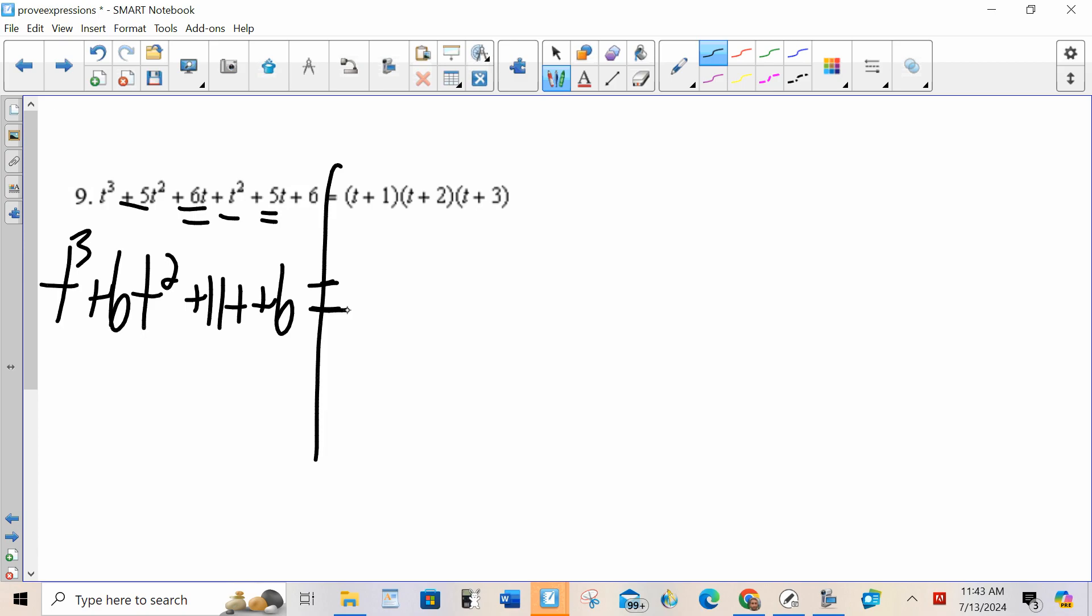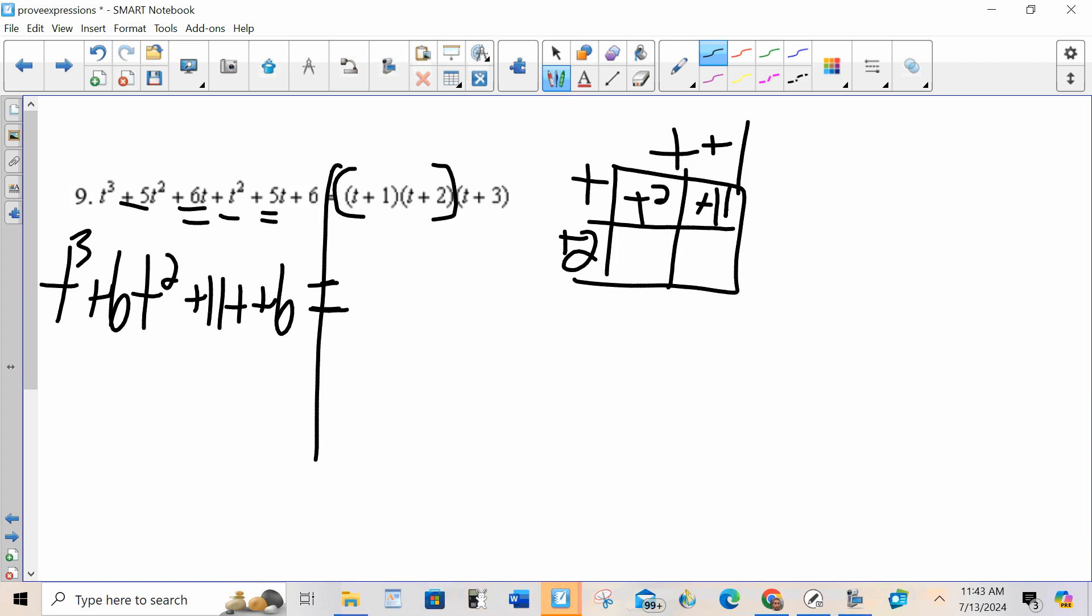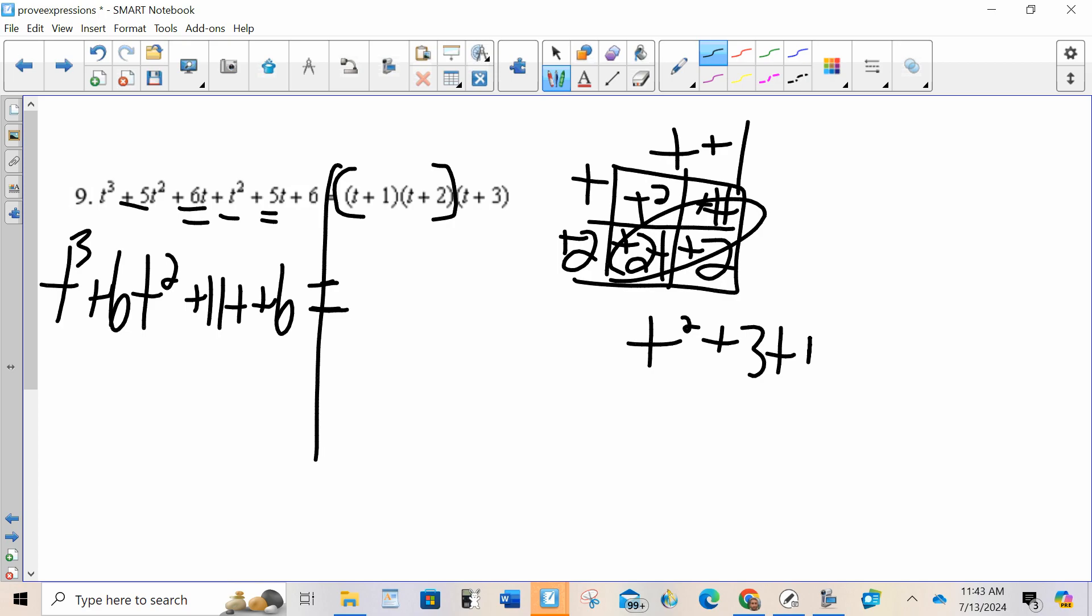And my right-hand side, well I can't multiply three things together at once but I can multiply two things together at once. t plus 1 times t plus 2 is t squared plus 1t plus 2t plus 2. I combine like terms I get t squared plus 3t plus 2.